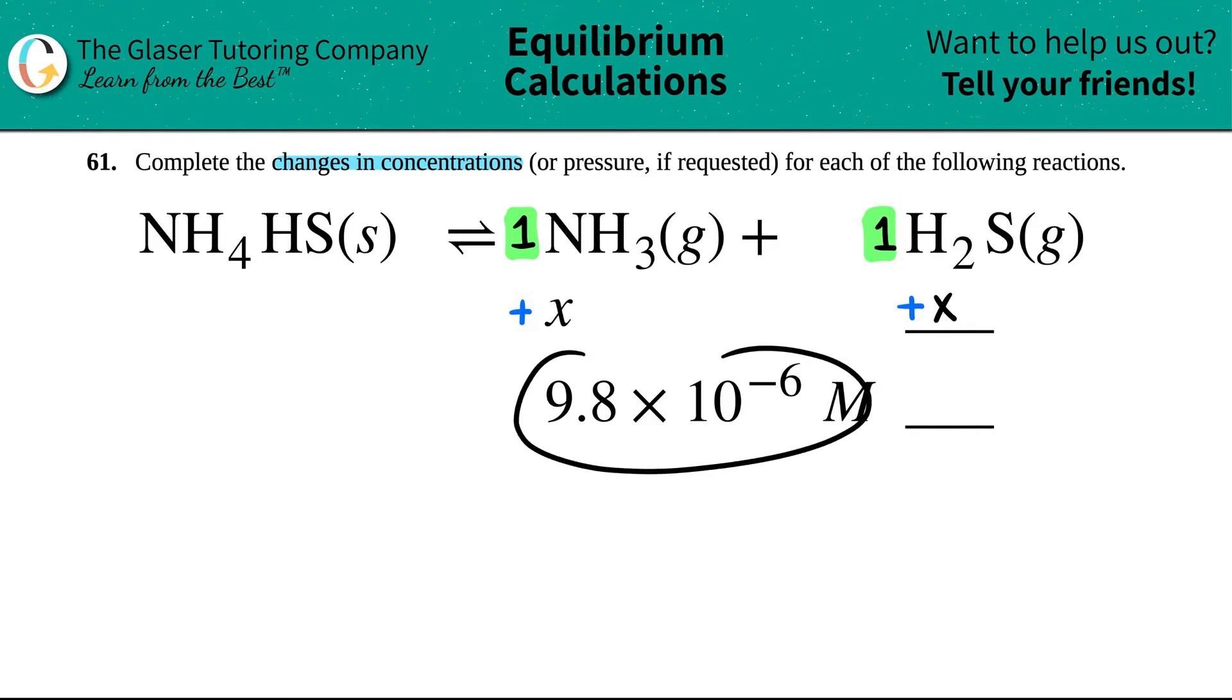So if NH3 goes up by a factor of 9, or actually a change of 9.8 times 10 to the negative 6 molarity, what do you think this is going to increase by? Yeah, it's the same, because it's the same ratio, 9.8 times 10 to the negative 6 molarity. I just want to point out here, and maybe I'll just put a positive in front of here, just to make it apparent that it's increasing and not decreasing.